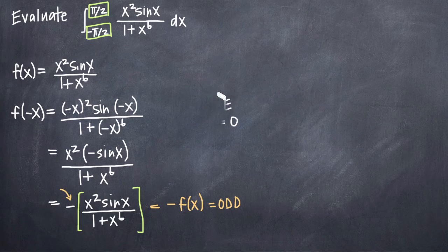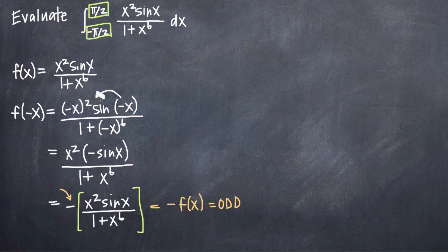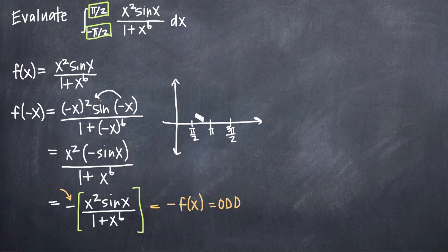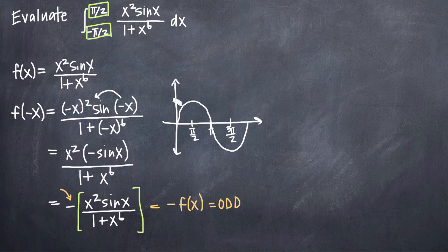A quick caveat about the sine of negative x step: if you're ever unsure whether you can pull a negative sign out of a trigonometric expression, you can graph the function to check. The graph of sine of x on an xy-plane passes through the origin, rises to 1 at pi over 2, comes back down to 0 at pi, drops to negative 1 at 3 pi over 2, and returns to 0 at 2 pi.